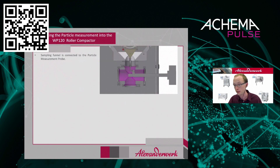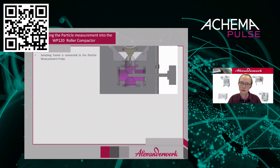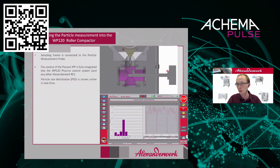The next challenge is integrating the particle probe into the controls and mechanics. The mechanical integration is fairly easy, as shown here. We have the newly developed funnel, and the particle probe: material comes from the granulator, goes into the funnel, then into the particle probe where it is measured, and then returns into the main flow of material. The next step is integrating the results from the particle probe into the controls of the Alexanderwerk WP 120 roller compactor.